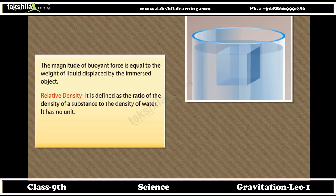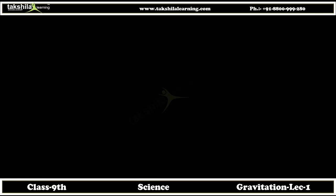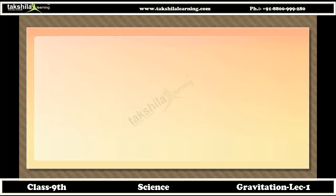Relative density: it is defined as the ratio of the density of a substance to the density of water. It has no unit. Relative density = density of substance / density of water.